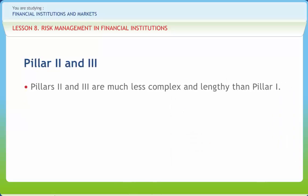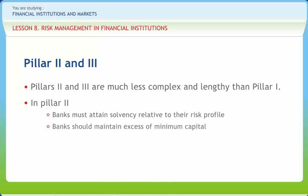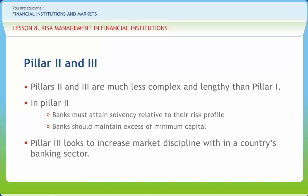Pillars 2 and 3 are much less complex and lengthy than Pillar 1. In Pillar 2, banks must attain solvency relative to their risk profile. Supervisors should review each bank's own risk assessment and capital strategies. Banks should maintain excess of minimum capital. Regulators would intervene at an early stage, with the possibility of rewarding banks with better risk management systems. RBI has already taken steps to conduct supervisory review. Pillar 3 wants to increase market discipline within a country's banking sector. Basel 2 hopes to empower shareholders to enforce discipline in the risk taking and reserve holding methods of banks, where banks seen to hold few reserves and take on too much risk are punished by their own shareholders.